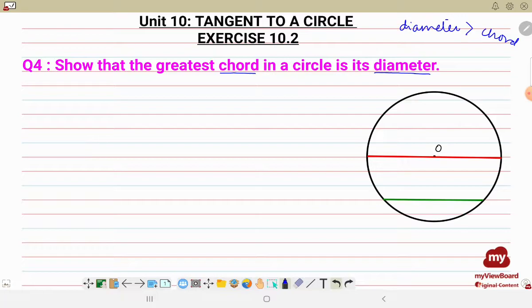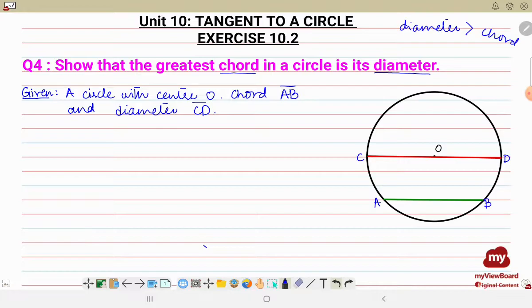So let us write down what is given to us. Given: a circle with center O, and let's say CD, if I label it, CD is the diameter and AB is the chord. Chord AB is given to us and diameter CD is also given to us, right?